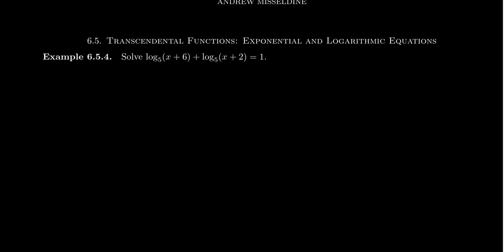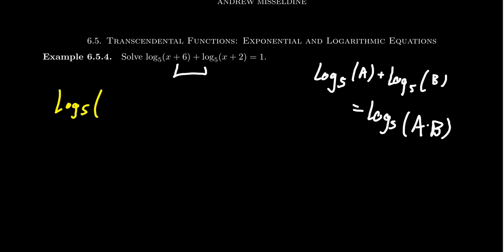The key to solving this one is to use the first law of logarithms, which we saw in lecture 41. If we take log base 5 of some quantity A and add it to log base 5 of some quantity B, then you can actually condense the logarithms together, log base 5 of A times B. It can be whatever base you want. So we can combine together these logarithms. The sum of two logs becomes a log of a product. We get log base 5 of (x+6) times (x+2). At some point we're going to have to foil out that product, but we'll do that later. This equals 1.